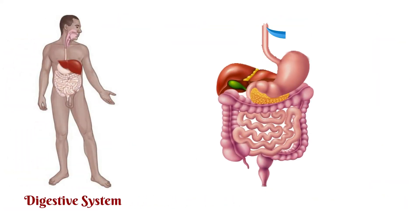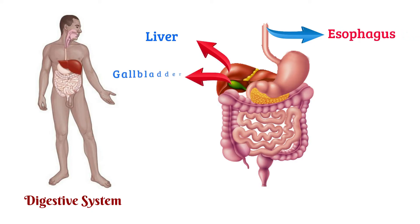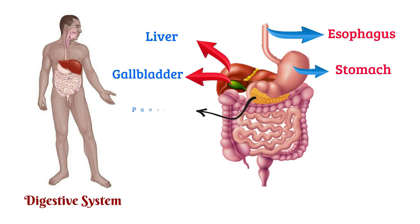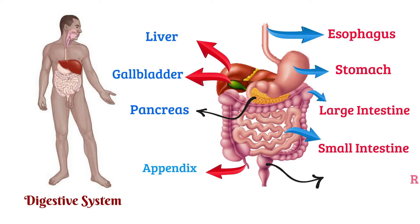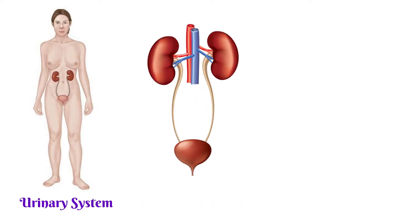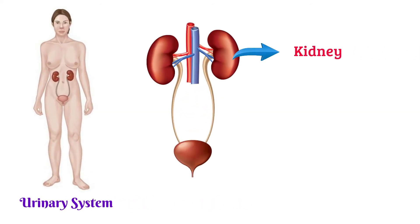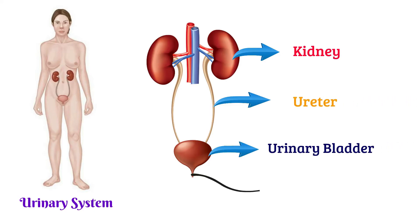Digestive system: esophagus, liver, gallbladder, stomach, pancreas, large intestine, small intestine, appendix, rectum, anus. Urinary system: kidney, ureter, urinary bladder, urethra.